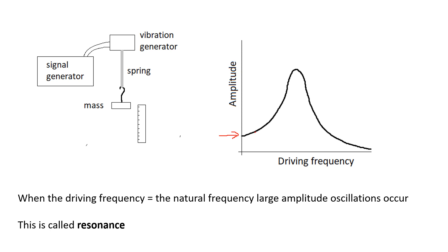But then we get a peak — and we get this peak when the driving frequency is the same as the natural frequency of the oscillator. Basically, if we tell it to oscillate at the frequency that it likes to oscillate at, we get large amplitude oscillations. This is called resonance. When the driving frequency is equal to the natural frequency of the system, we get large amplitude oscillations. That is the definition of resonance — learn that sentence word for word.